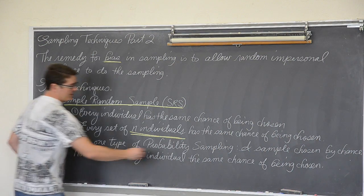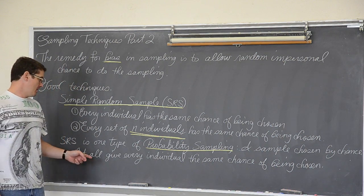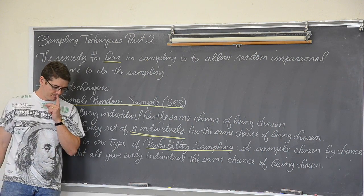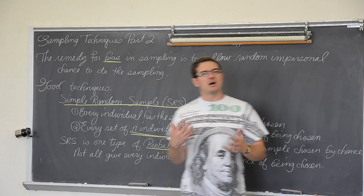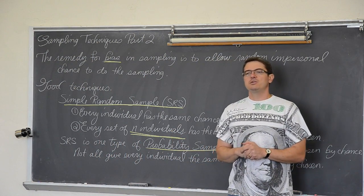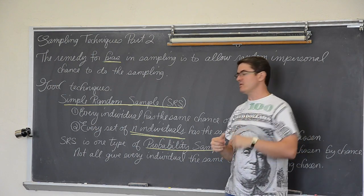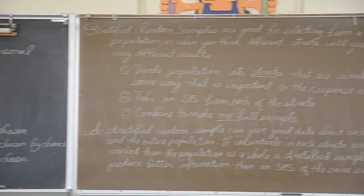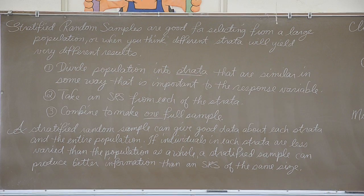And an SRS is one type of probability sampling. Sampling chosen by chance, not all good. Not all will give every individual the same chance of being chosen. What do I mean by every individual will not necessarily be the same chance of being chosen? Well, let me just keep talking about the school here. If I wanted to do a technique we are going to learn in just a second. Actually, let me go ahead and skip ahead to that.